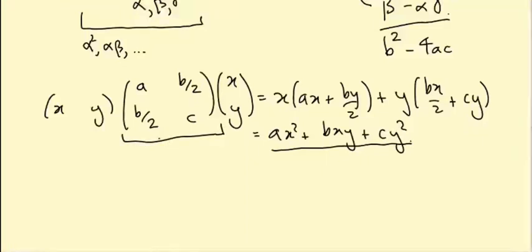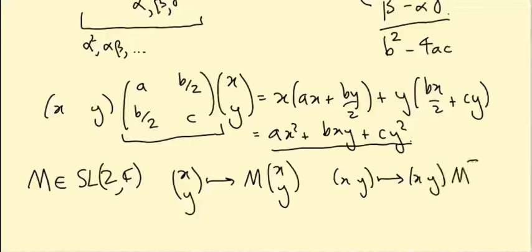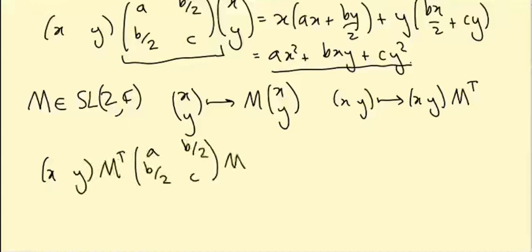Now, what about the group action? We've been using SU(2), but I'm going to allow ourselves to work with the slightly bigger group SL(2,C) — 2×2 complex matrices with determinant one. If we change basis by an element M in SL(2,C), then (x,y) is sent to M(x,y). The row vector (x,y) goes to (x,y)·M^T on the right. So the quadratic form turns into (x,y)·M^T times the matrix times M times (x,y) — that's our new quadratic form.